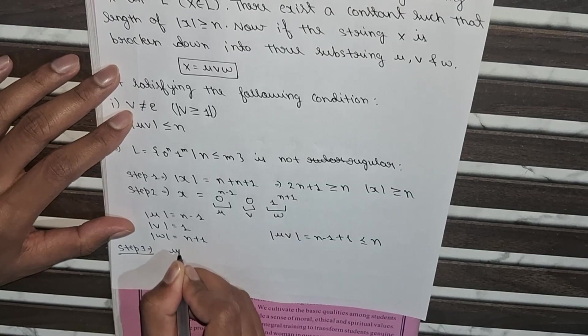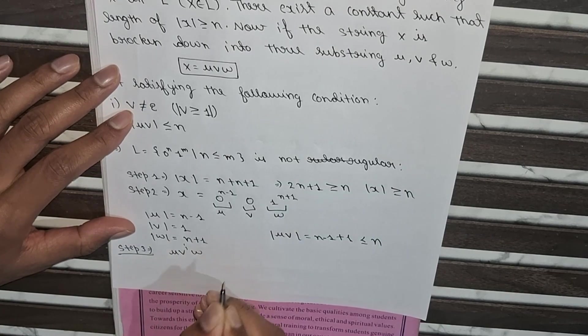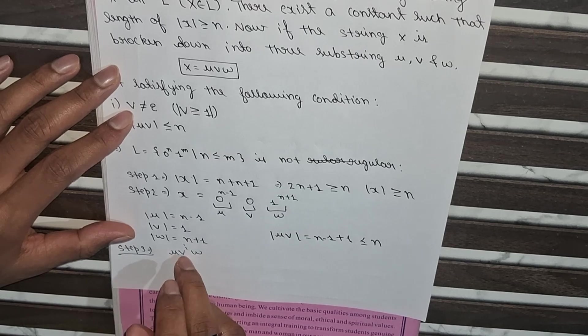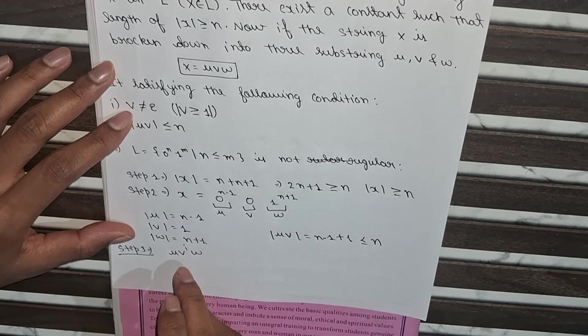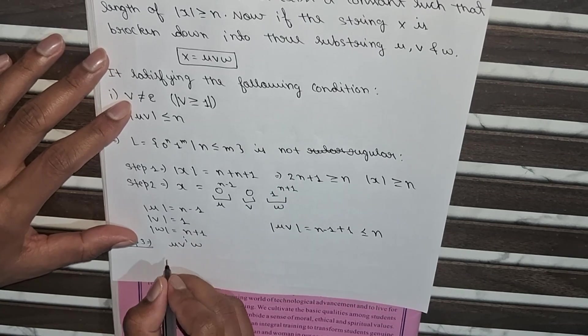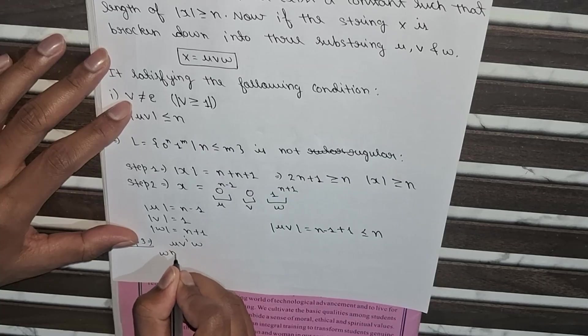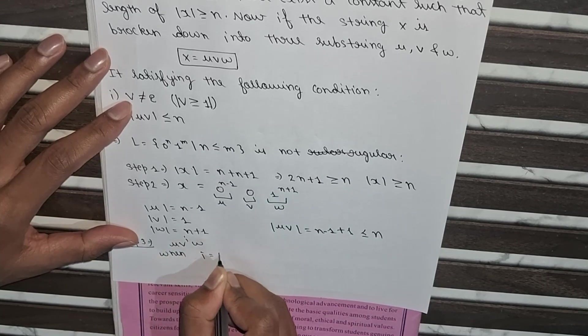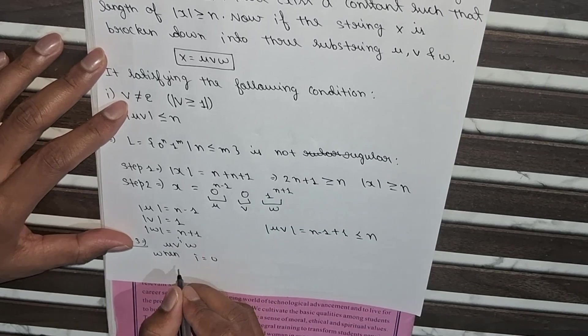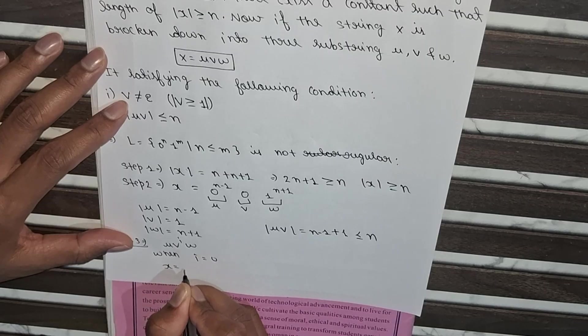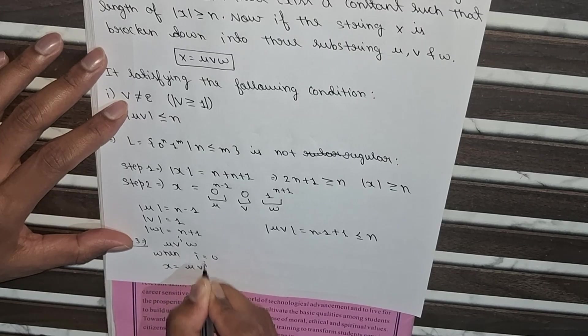So in this uv to the power i w, here we will put the definite values of i to check if it is regular or not. So when we will put i equals 0 here, so here x equals u to the power i, w.